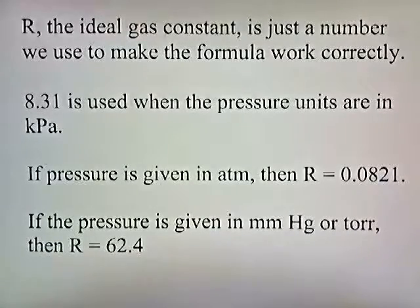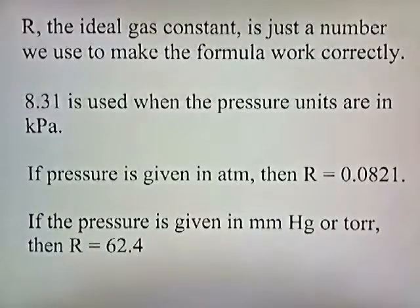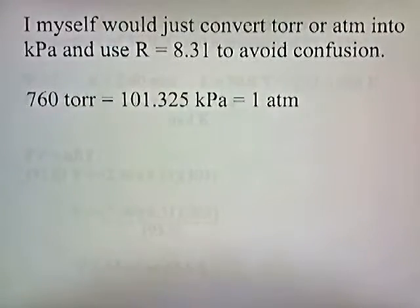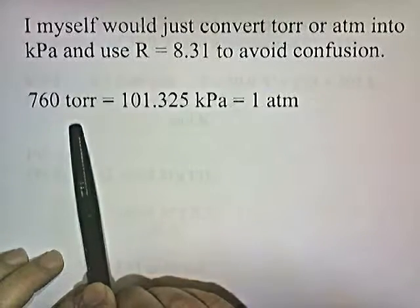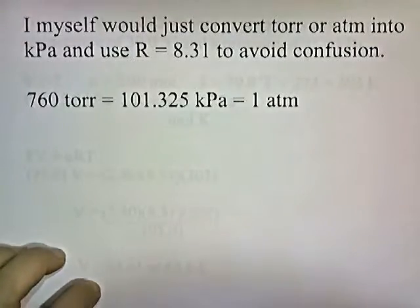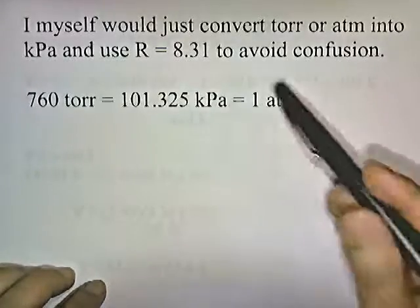R, the ideal gas constant, is a number we use to make the formula work correctly. 8.31 is used when the pressure units are in kilopascals. If pressure is given in atmospheres, then R is 0.0821. If the pressure is given in millimeters of mercury or torr, then R equals 62.4. I would just convert torrs or atmospheres into kilopascals and use R equals 8.31 to avoid confusion. You should remember that 760 torr is the same as 101.325 kilopascals, which is the same as one atmosphere.